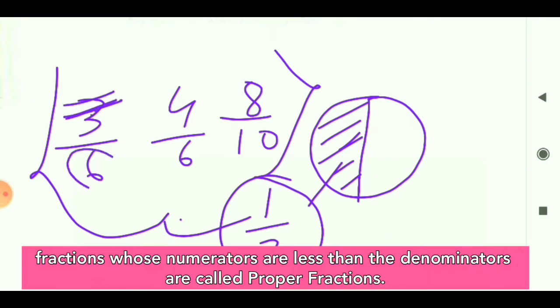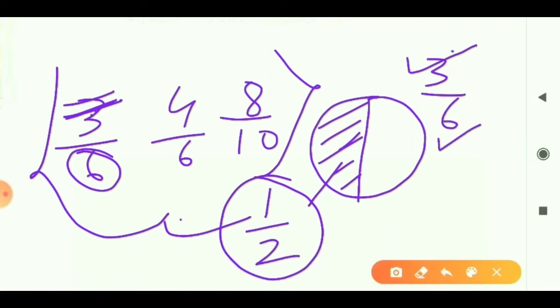In another way, you can say that proper fractions are fractions whose numerators are less than the denominators. For example, in 3 upon 6, the numerator is 3 and the denominator is 6. Since 3 is less than 6, these types of fractions are known as proper fractions.